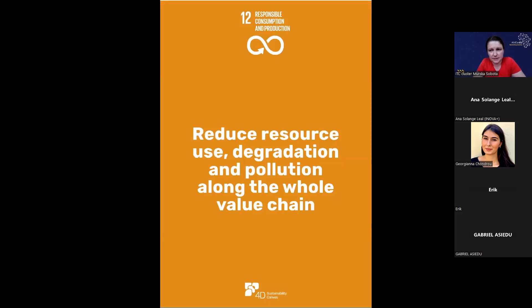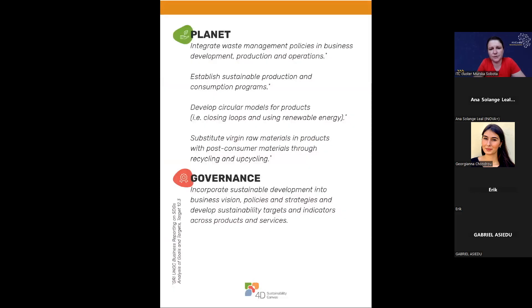The next SDG is about reducing resource use, degradation, and pollution along the whole value chain. For planet: integrate waste management policies in business development, production, and operations; establish sustainable production and consumption programs; develop circular models for products; substitute virgin raw materials with post-consumer materials through recycling and upcycling. For governance: incorporate sustainable development into business vision, policies, and strategies, and develop sustainability targets and indicators across products and services.